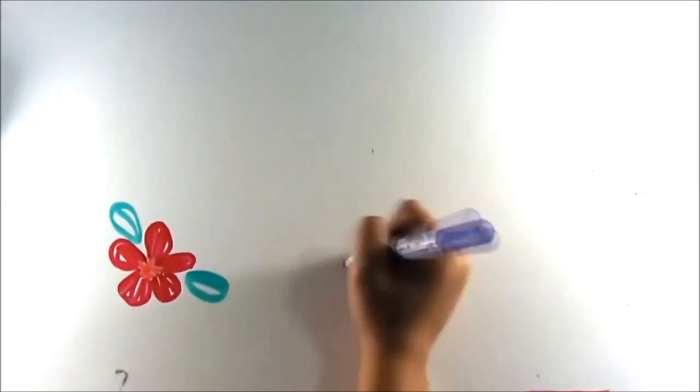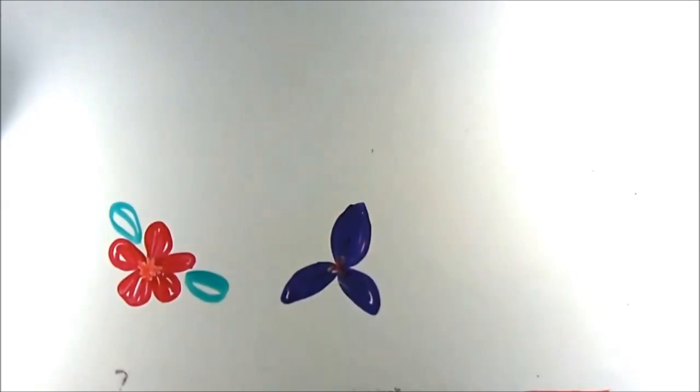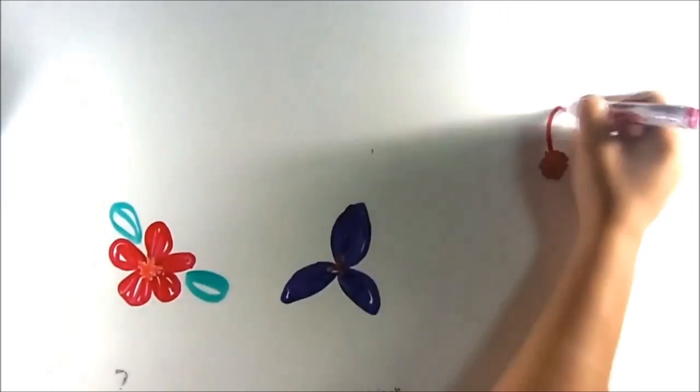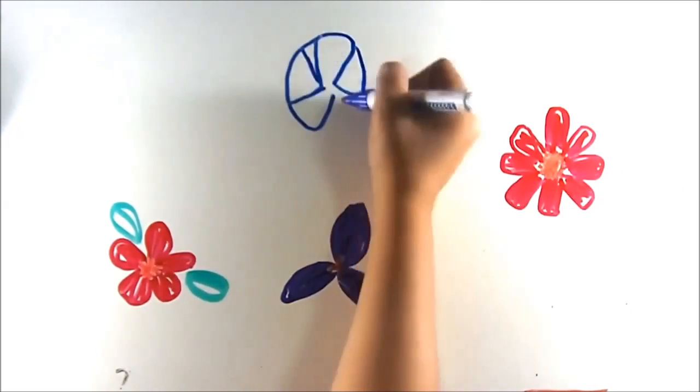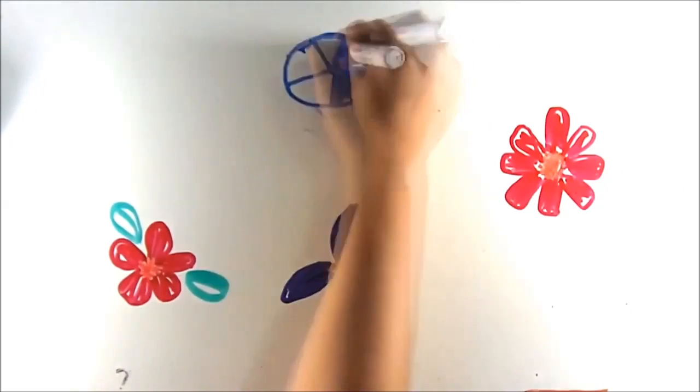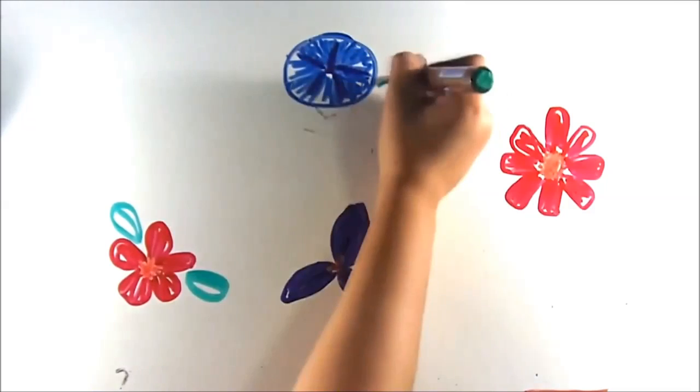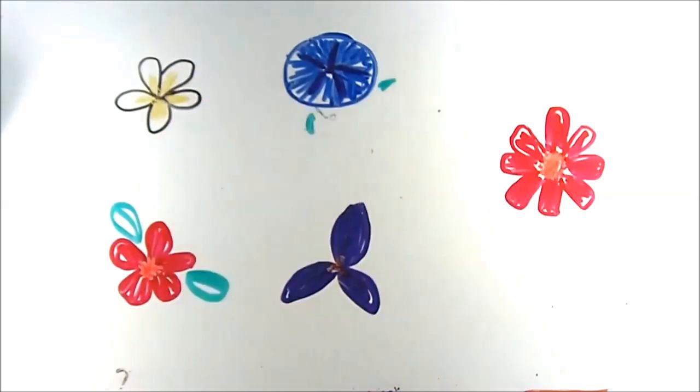But one should understand that most of the flowers have petals that are in the Fibonacci sequence. Hundreds of species have five, eight, thirteen, and other numbers in the Fibonacci sequence as their petals. We have noticed the presence of the Fibonacci sequence in flowers.